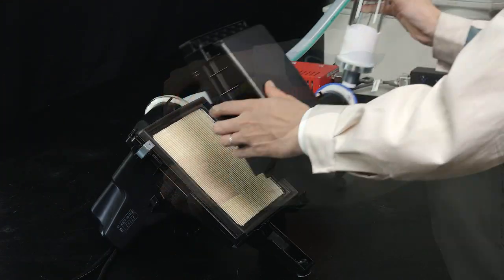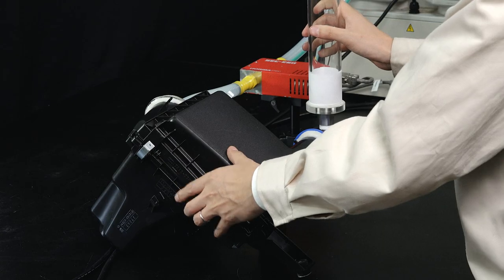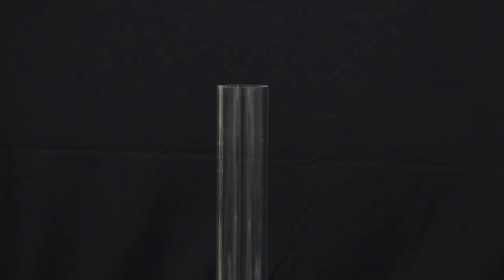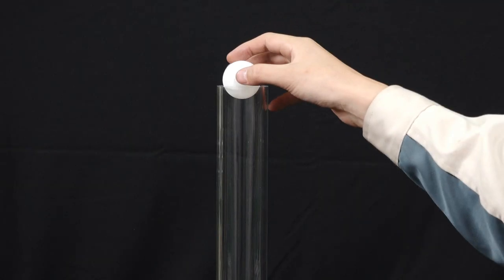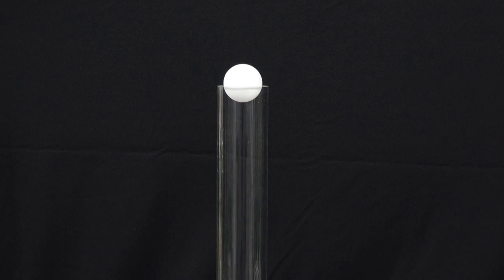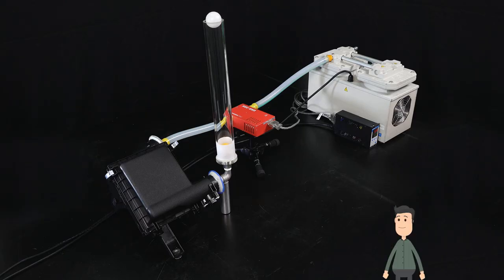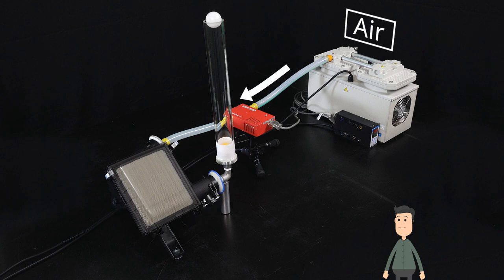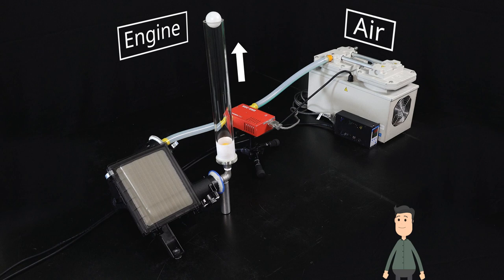Look at this. We put the filter in a holder to compare how much air passes through. See this tube? We put a ping pong ball in there so we can easily see how much air is coming through. Pretty cool, huh? The tube is located right where the air would be coming out and going into the engine. The higher the ball, the better.